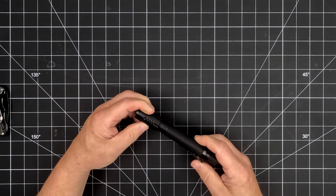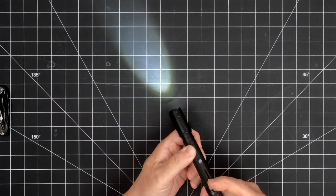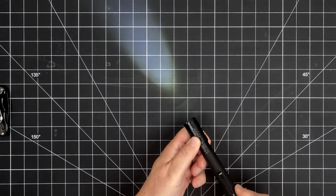A twist to focus light beam and a sturdy metal pocket clip round out the flashlight's features.